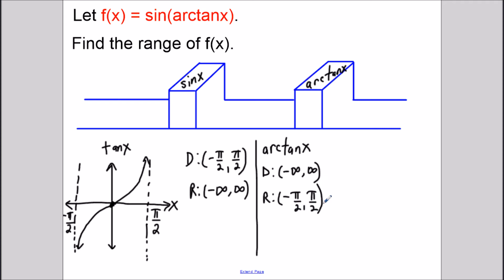Using the assembly line analogy, the x values we can send go from negative infinity to infinity, so the domain of f of x is going to go from negative infinity to infinity. When we send that through the first part of the function — through arctangent — we're going to get some output value between negative pi over 2 and pi over 2.